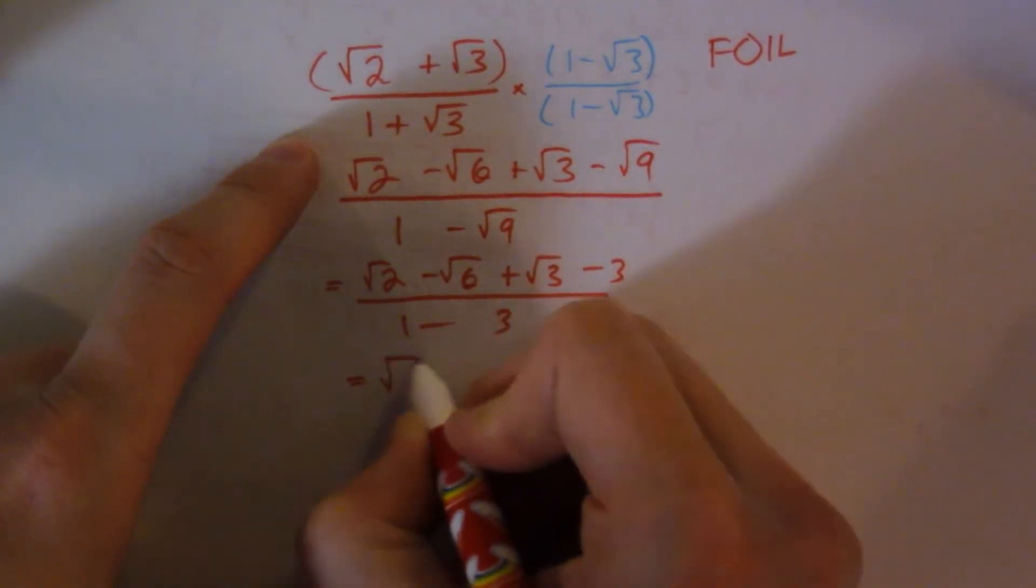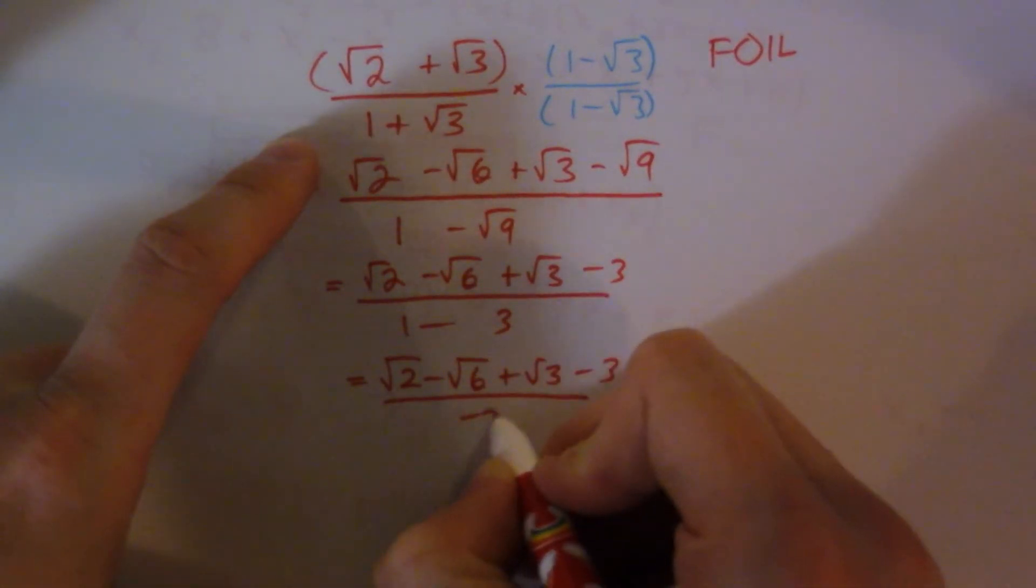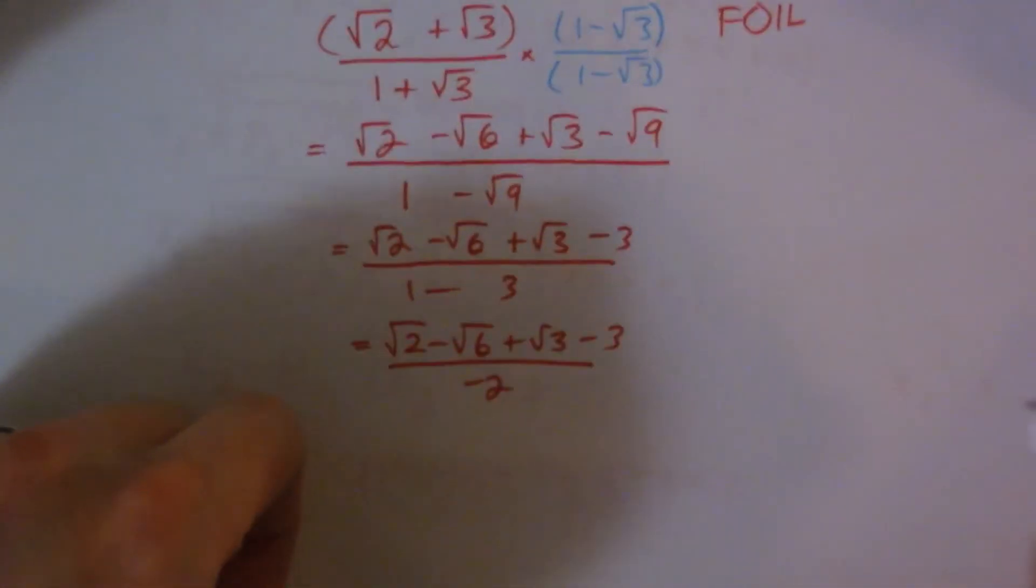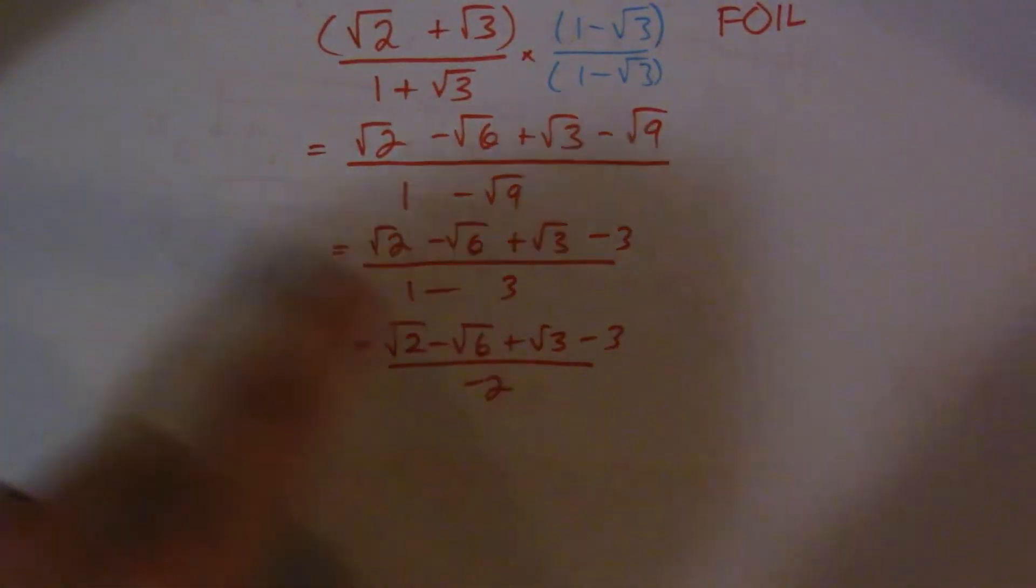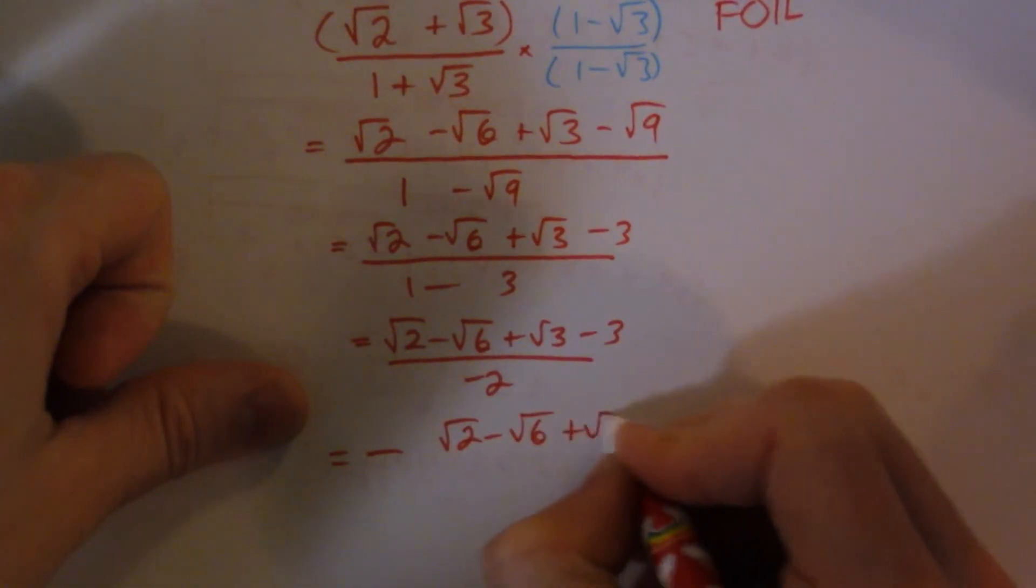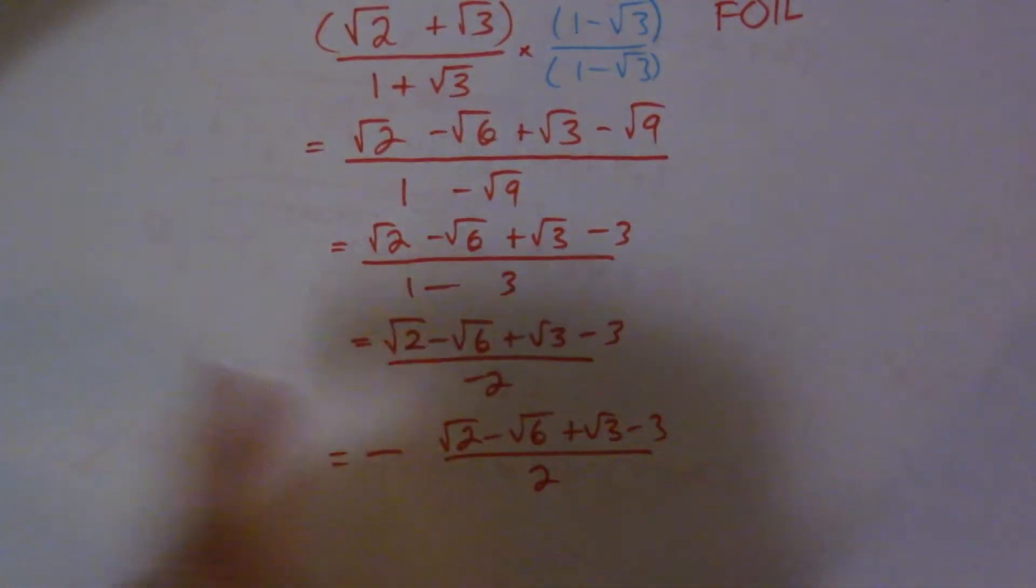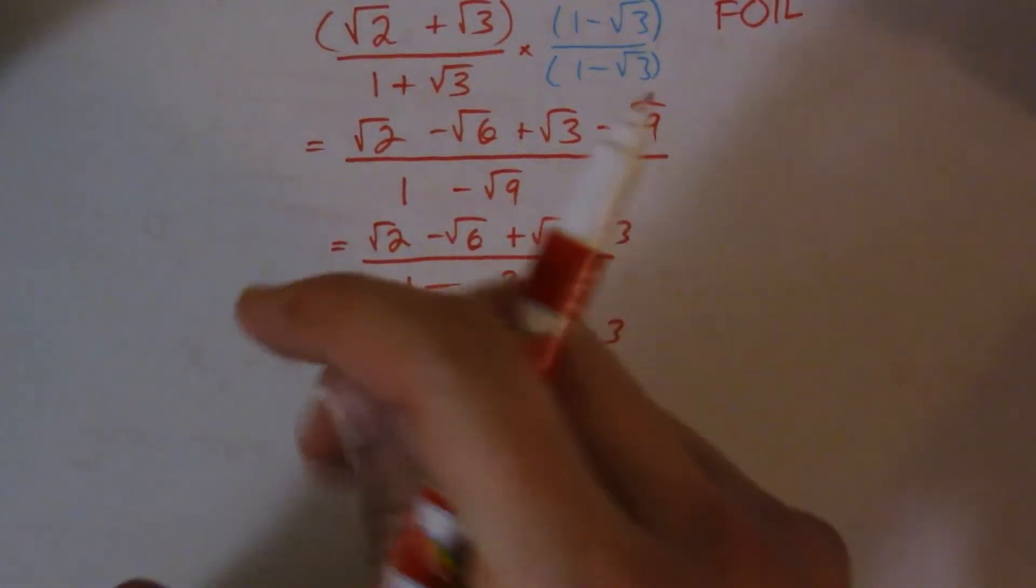So we end up with root 2 minus root 6 plus root 3 minus 3 all over 1 minus 3, which doesn't really simplify much. But we end up with all over negative 2. I'm just going to leave it like that, even though some teachers will probably tell you to change the signs. Actually, I'll write it one more step. I'd probably write it like this. Just like that. So write the negative sign to the side, so it can apply to either one you choose.